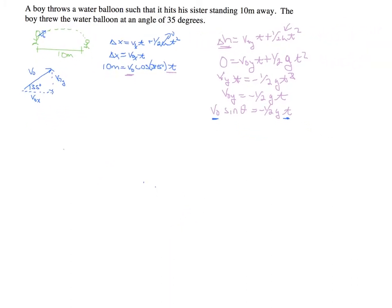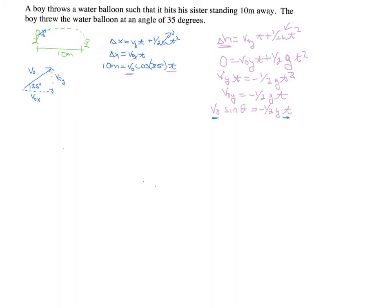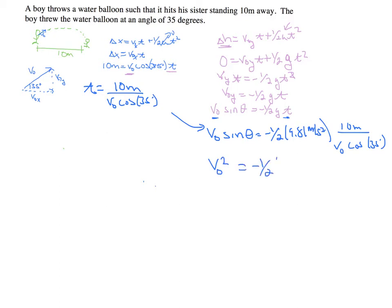I'll take this horizontal expression and rewrite it in terms of t. So t is 10 meters over V0 cosine 35 degrees. I'll use that down here. So V0 sin theta equals minus one half 9.81 meters per second squared times t, which is 10 meters over V0 cosine 35 degrees. Now solving for V0, I get V0 squared equals minus one half 9.81 meters per second squared times 10 meters over sine 35 times cosine 35.